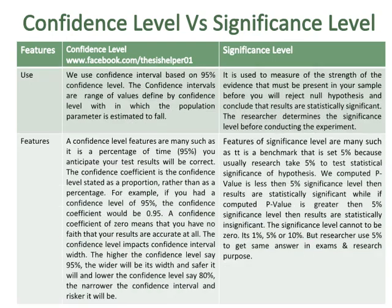We use a confidence interval based on a 95% confidence level. The confidence interval is a range of values defined by the confidence level within which the population parameter is estimated to fall. While the significance level is used to measure the strength of the evidence that must be present in your sample before you reject the null hypothesis and conclude that the results are statistically significant.